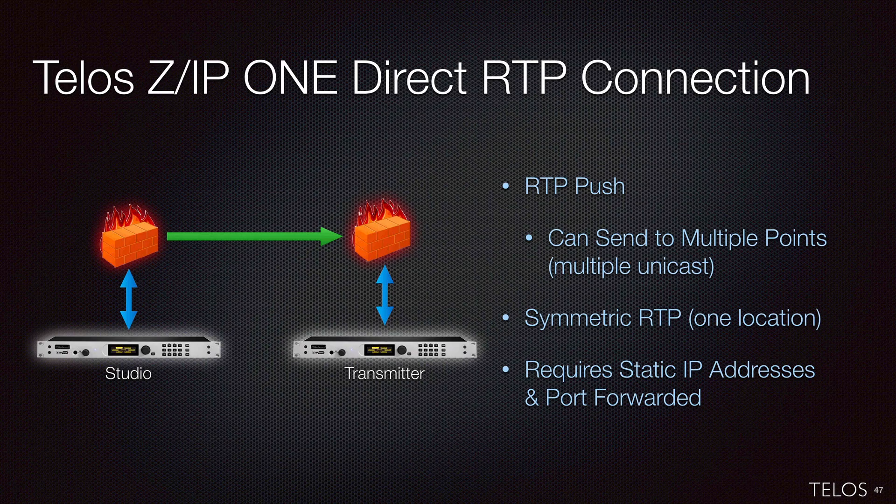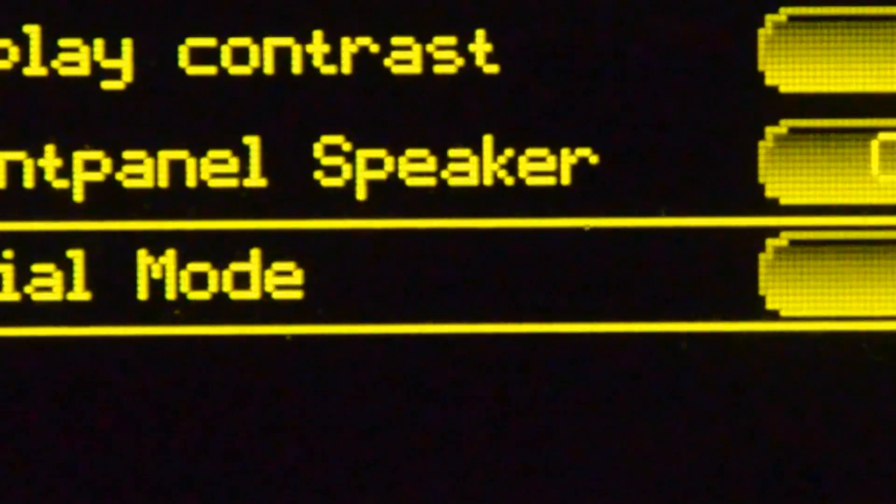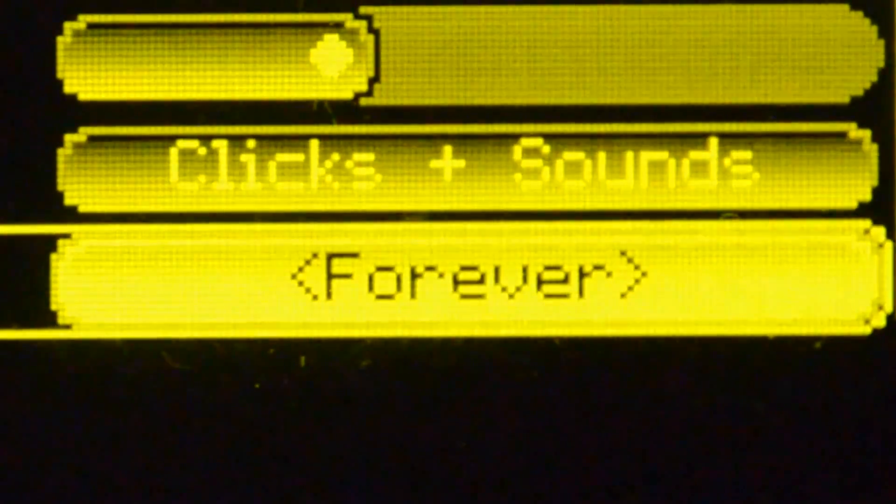With RTP push, you're simply pushing a stream to a fixed IP address and port number, and you can automatically get a return stream if you want. With any of these call types — zip server, direct TSCP, or RTP push/symmetric — you get RS-232 data and GPIO from end to end, plus automatic reconnection if something goes wrong. If the internet connection drops or power goes out, it'll reconnect automatically when restored. Other videos in this series cover which coding algorithm is right for your needs and how to set up each connection type. Thanks for using the Telos ZIP1 for your full-time or backup STL.